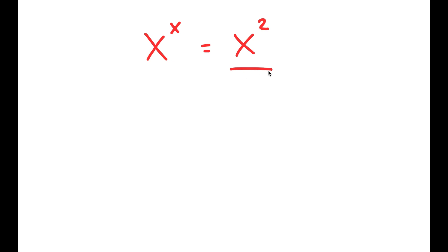So to solve this, I'm going to first start by dividing both sides by x squared. So these two cancel out, and I get x to the power of x over x to the power of 2 is equal to 1.